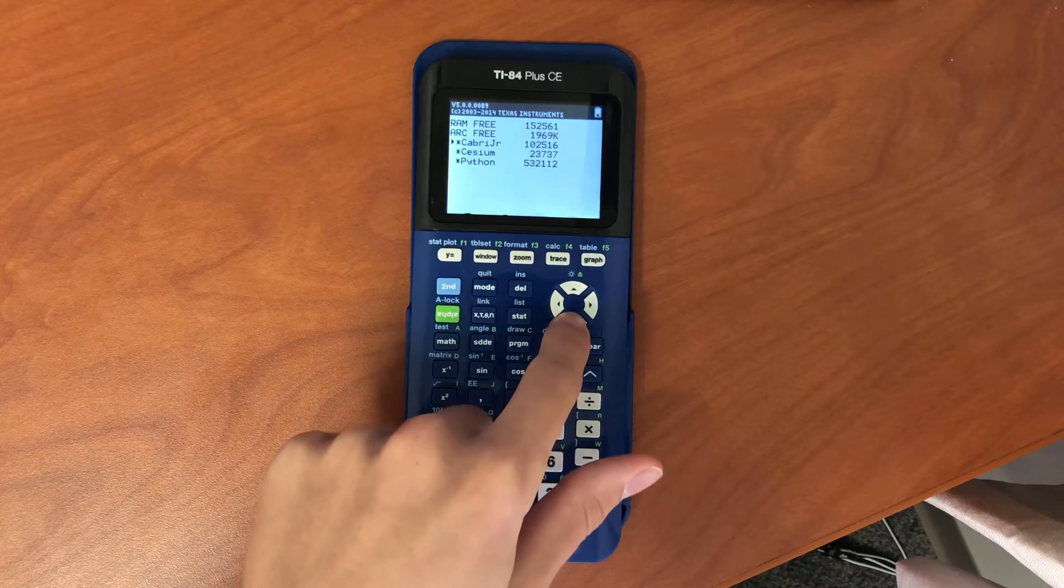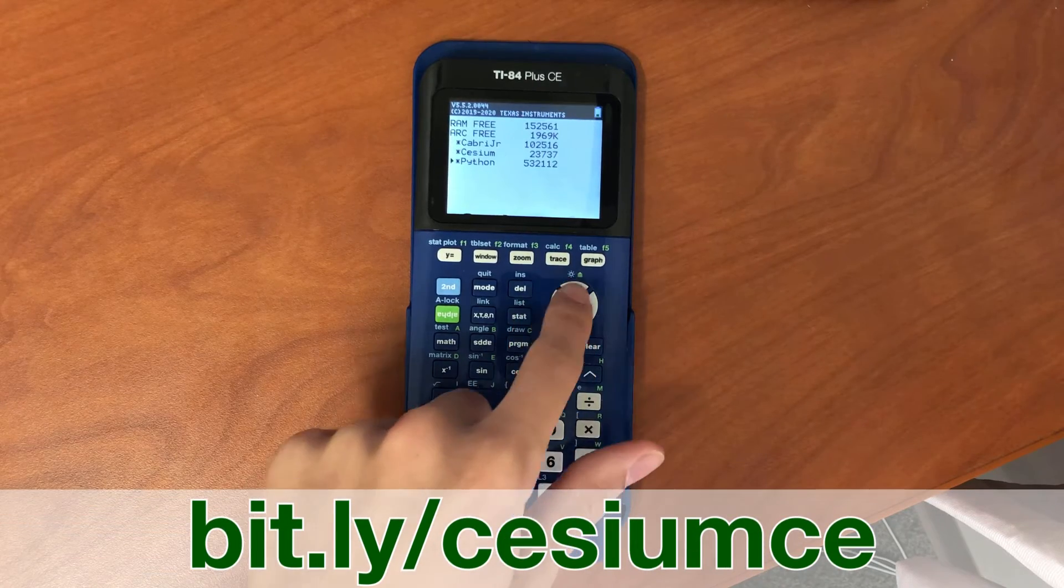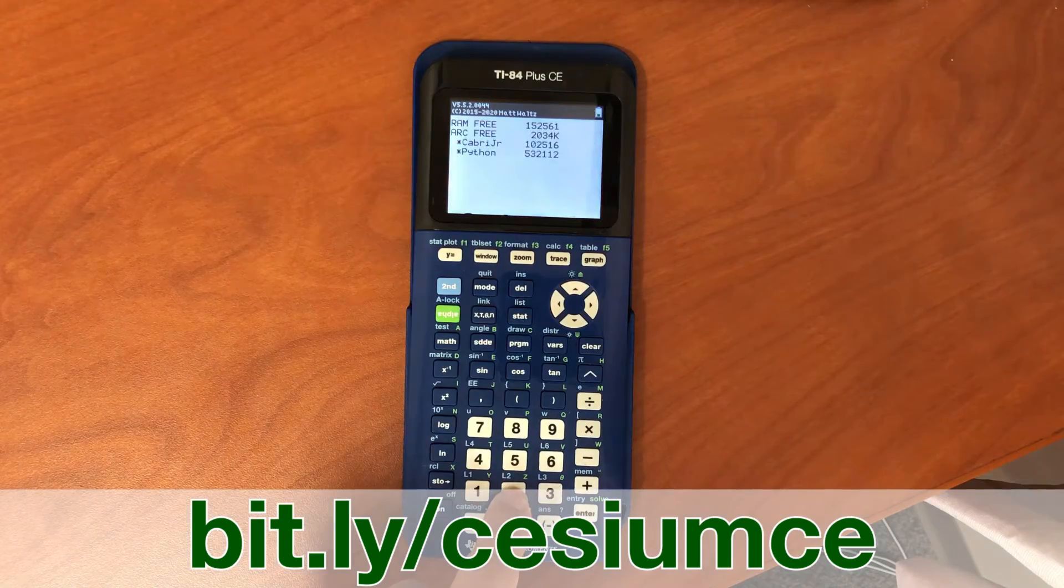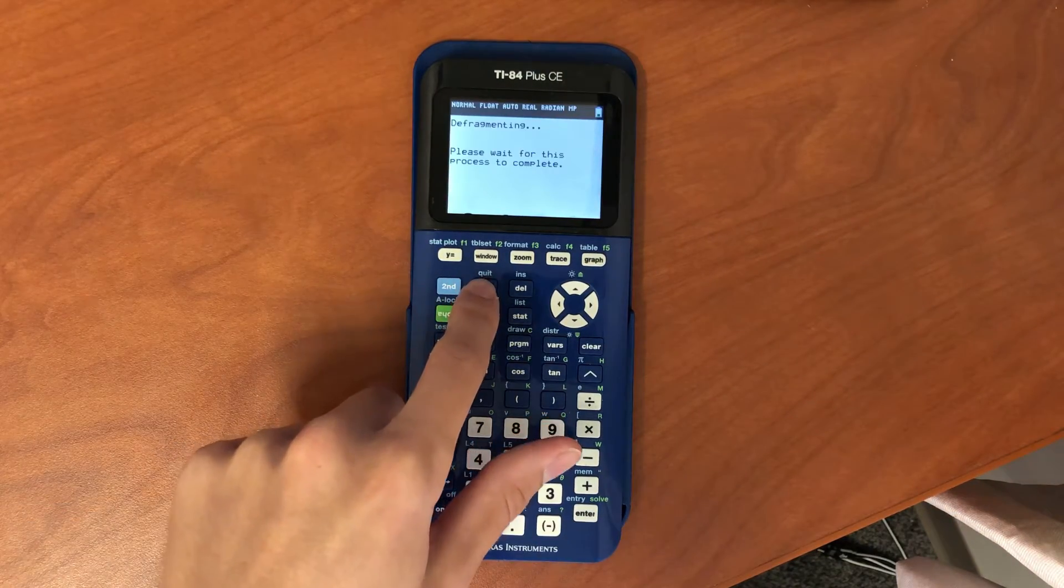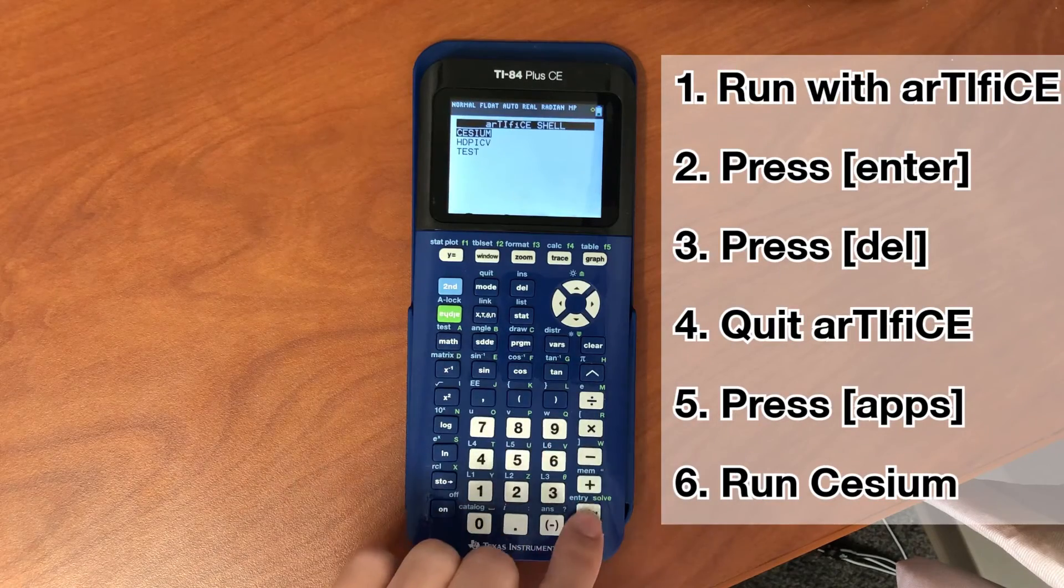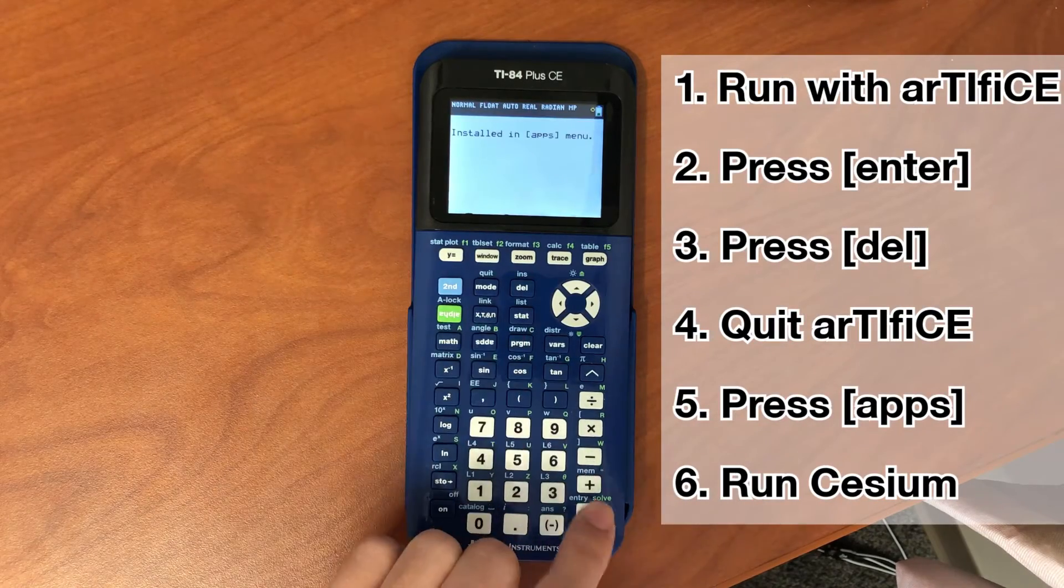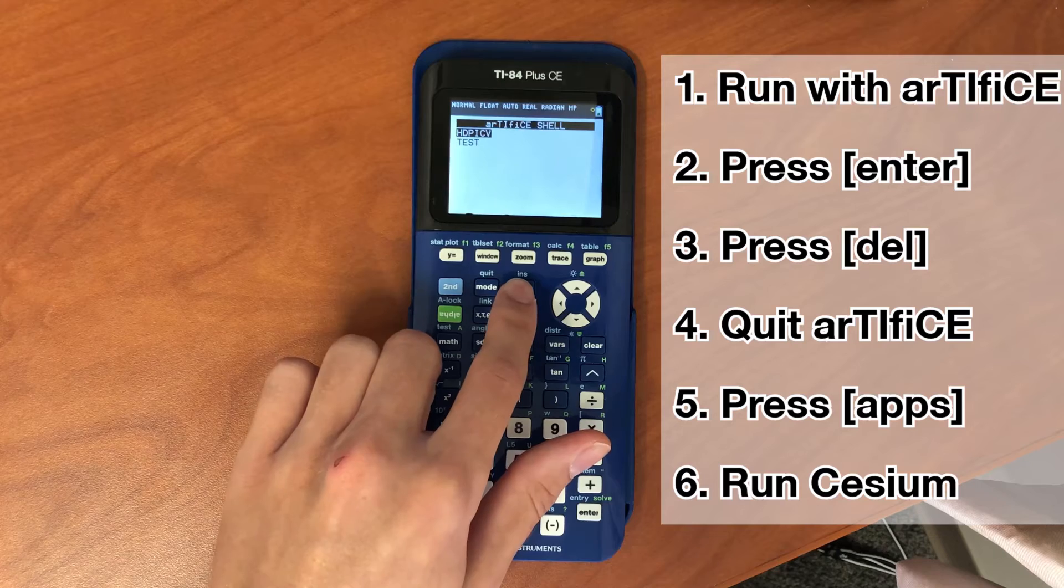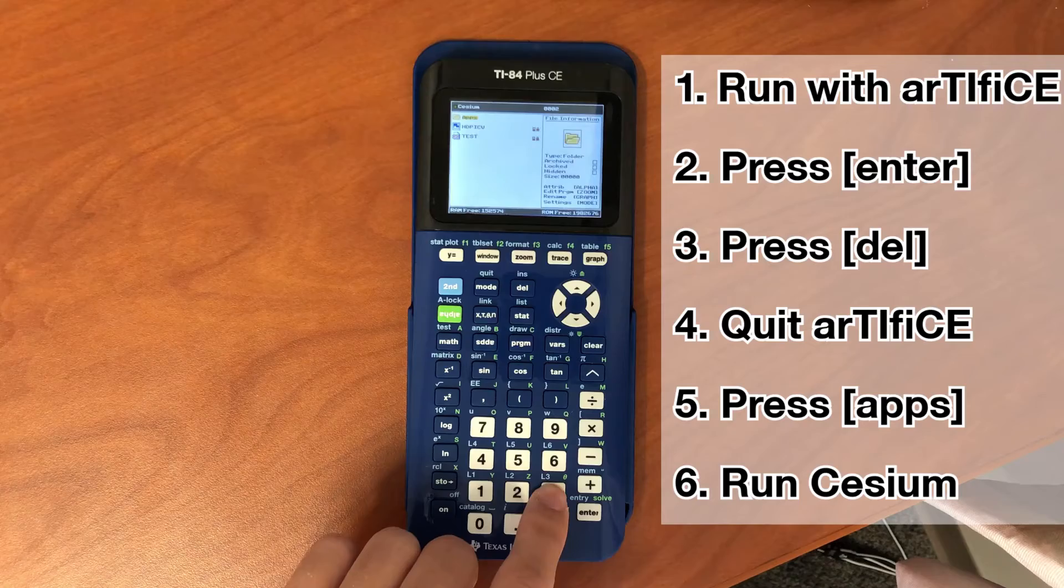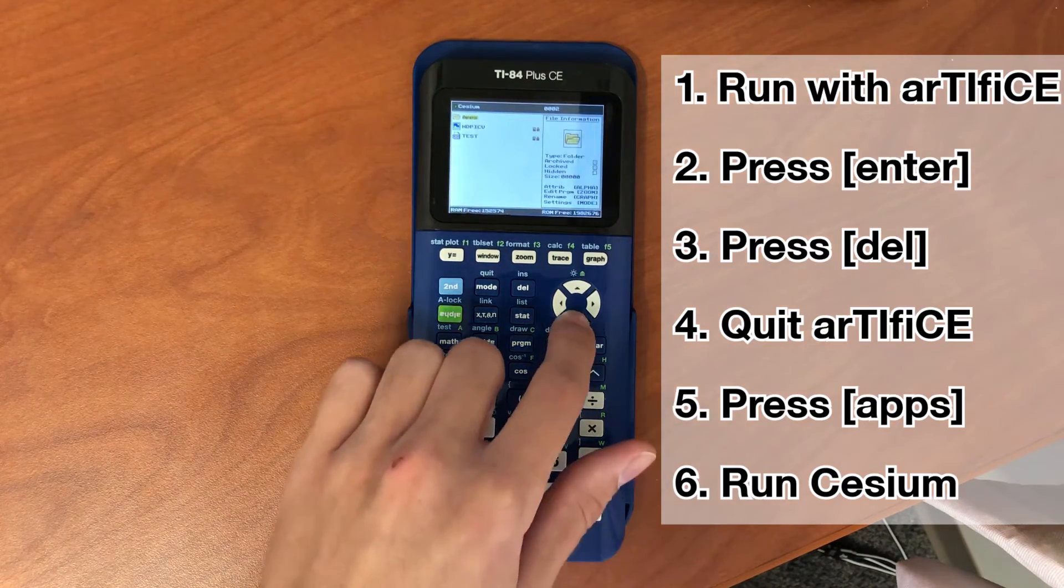You can get the latest version of Cesium by going to bit.ly/cesiumce. Since I already showed you how to send and run files, I'll skip to the Cesium installation process. First run Artifice, then select program Cesium. Press del, then quit Artifice with mode. Now press apps and run the Cesium app. Congratulations, you have one place that houses and runs all your programs.